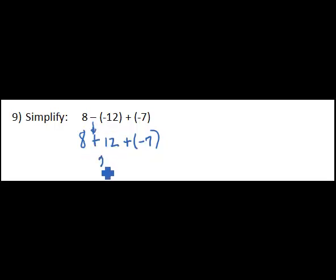So 8 and 12, of course, is 20, and 20 plus negative 7. Now, our rule for adding says that when they're the same sign, we add them, which that's where we got the 20.